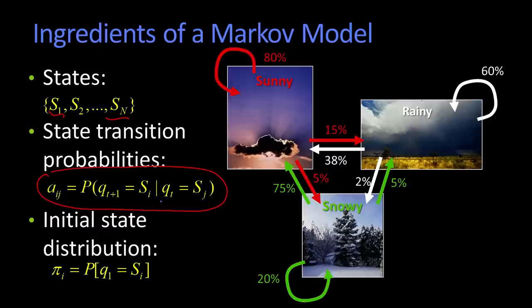And then finally, to kick things off, we need an initial distribution. That's just the probability that Q1, and I'm going to talk about Q a little bit more in a minute, that Q1 is equal to SI. So Q sub T is whatever state I'm at at time T. So Q sub 1 is the state at the first day, or time 1.